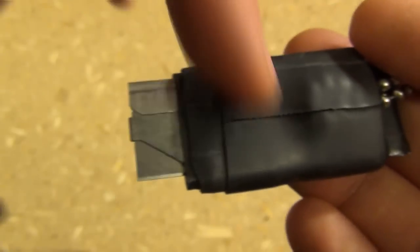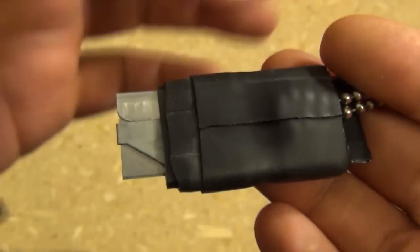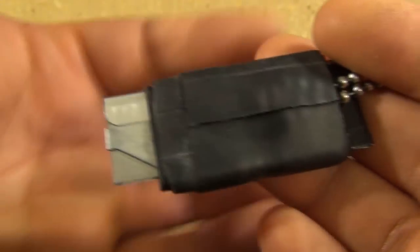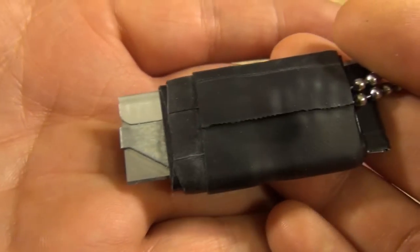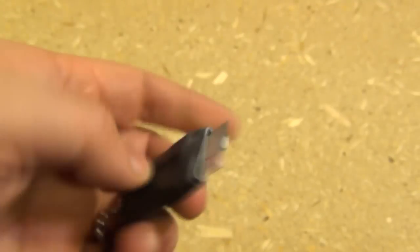And this is a ranger band. Now a ranger band is just like an old bicycle tube. It's basically a super rubber band.